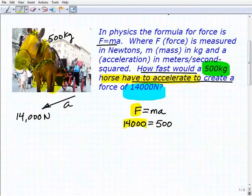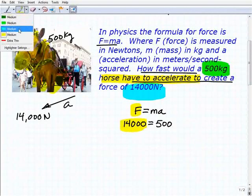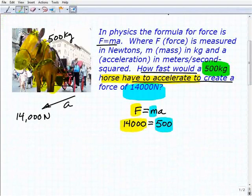Our force is 14,000 Newtons. Our mass is 500 kilograms, and how much would we have to accelerate this 500 kilograms to get 14,000 Newtons worth of force? We have to solve for a. This is a one-step equation. We have 500 times a equals 14,000.